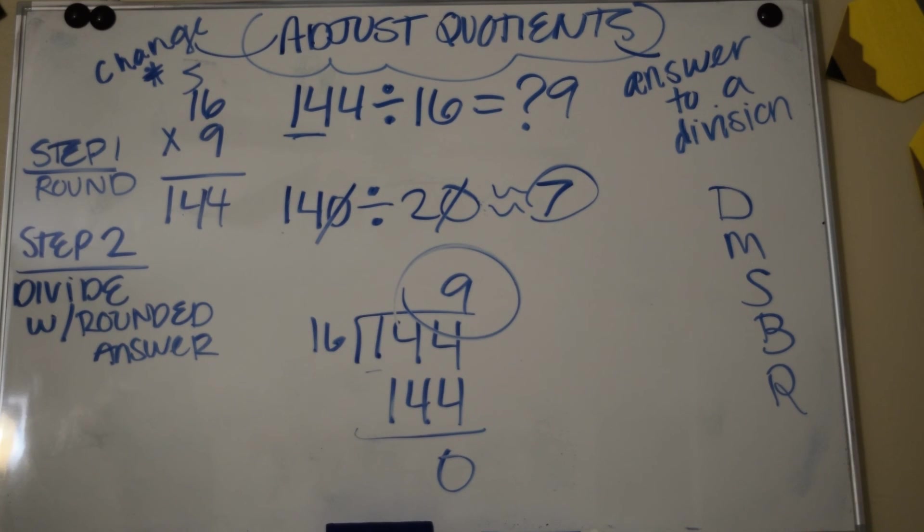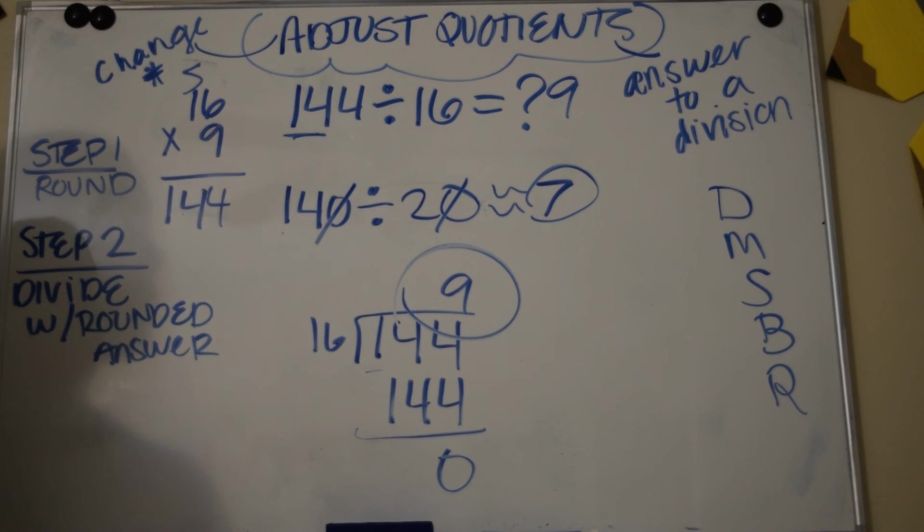You're going to see if that rounded answer works for the original problem, and if it doesn't, you're going to keep rounding up or down somewhere around that answer in order to find the answer. Okay, and that's called adjusting quotients.